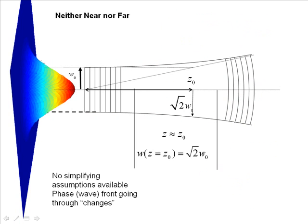The difficult region is neither near nor far. That's the region where Z is approximately equal to Z-naught. And you can see, at this place, the waist size is approximately the square root of 2 W-naughts, so it's about 40% bigger than it started with. The phase fronts aren't planar, and they're not spherical either. They're sort of in a transition period.